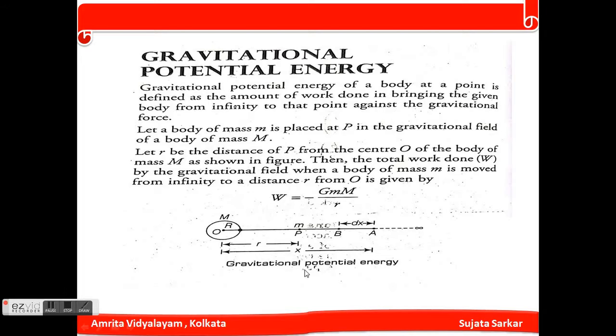So the total work done by the gravitational field when a body of mass m is moved from infinity to distance r from O is given by W equals minus GMm divided by r. This is the work done.